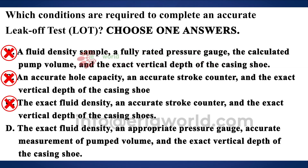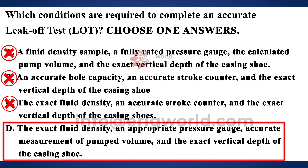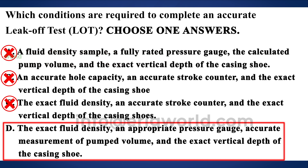The last point in option D is 'exact vertical depth of shoe.' All points in option D are correct, so D is the right answer: exact fluid density, appropriate pressure gauge, accurate measurement of mud pumped, and exact vertical depth of casing shoe.